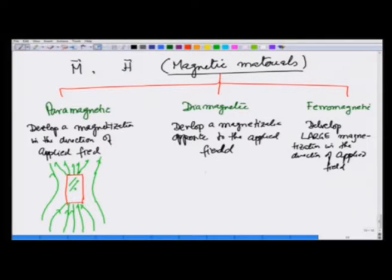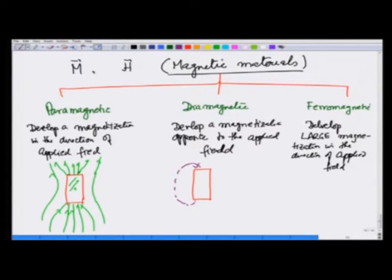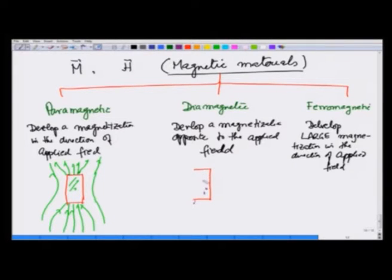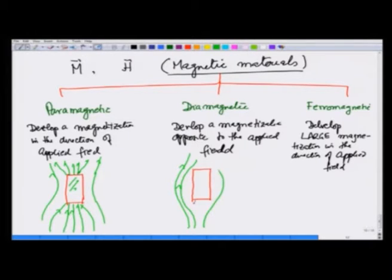On the other hand, if I look at a diamagnetic material in a similar uniform field, it will develop a magnetization in the opposite direction. The new field lines it creates are opposite to the applied field inside, and in the direction of the applied field outside. Therefore, the field becomes weaker inside, lines get repelled to the sides, becoming stronger there, and weaker inside compared to outside. This is a diamagnetic material.